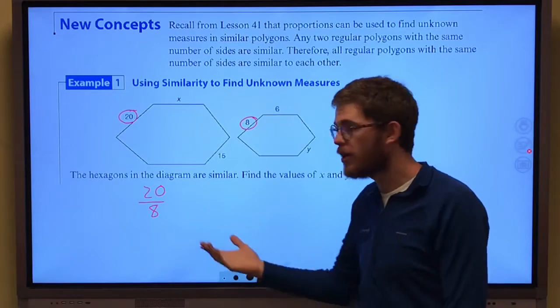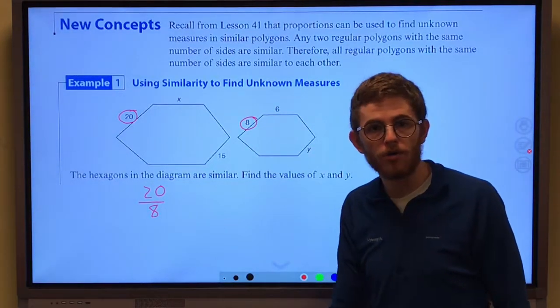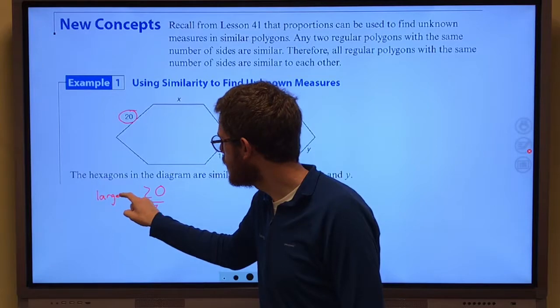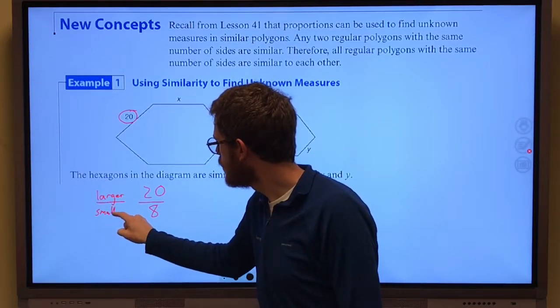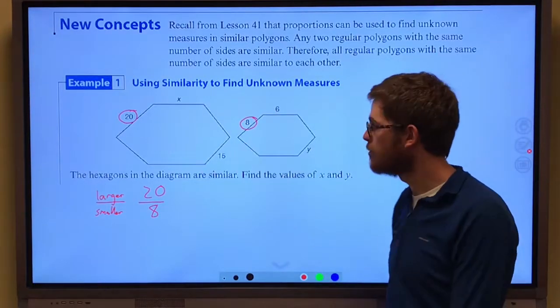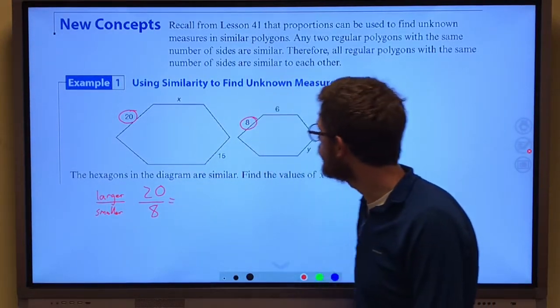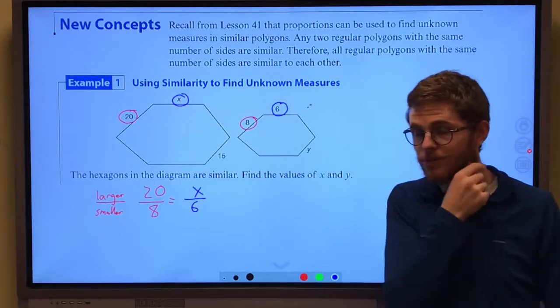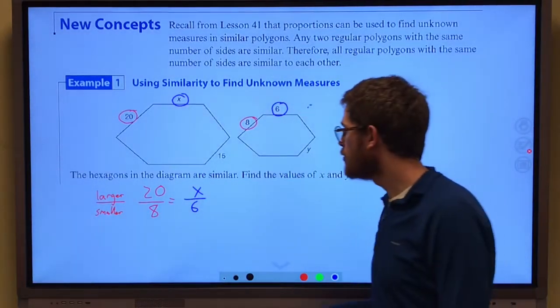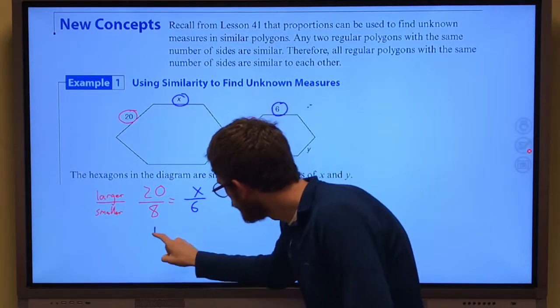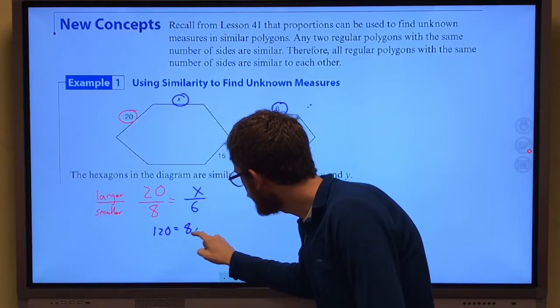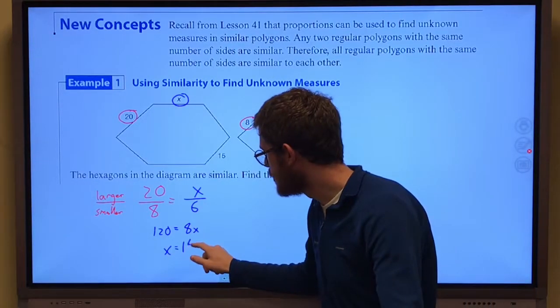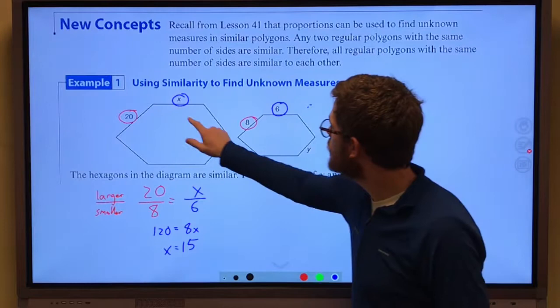Notice how I set that up. I decided right here to put the larger value over the smaller value and so I want to remain consistent to that. I always want the larger over the smaller, the larger is going to come from the larger hexagon, the smaller from the smaller hexagon. Well if I set that up, twenty over eight would equal x over six, the larger over the smaller. So if I set it up like that I can cross multiply. Twenty times six gives me 120 equals eight times x. When I divide both sides by eight, x comes out to be fifteen. So x is fifteen.